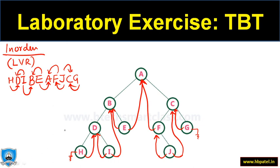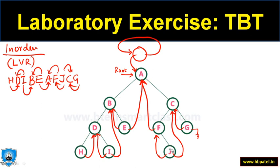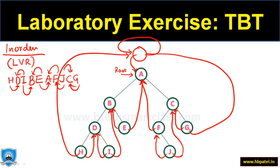Now add the dummy node. The left pointer of the dummy node points to the root A, and the right pointer points to itself. The leftmost pointer (H's left) and rightmost pointer (G's right), rather than being null, are made to point to this dummy node. This completes the threaded binary tree.